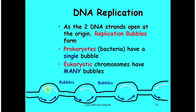Our two strands of DNA open up to form what are called replication bubbles where the strands are separated. In a prokaryotic cell, they have so little DNA that they really only need to open up a single bubble. But on a eukaryotic chromosome, replication starts in many different places to speed up the process, creating many replication bubbles with lots of origins of replication.